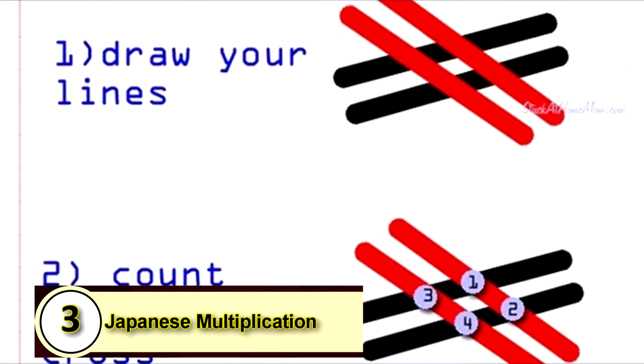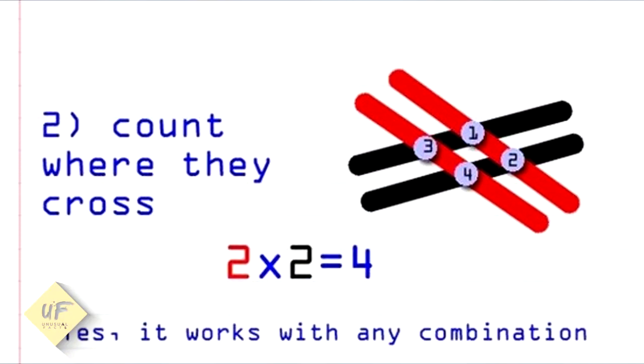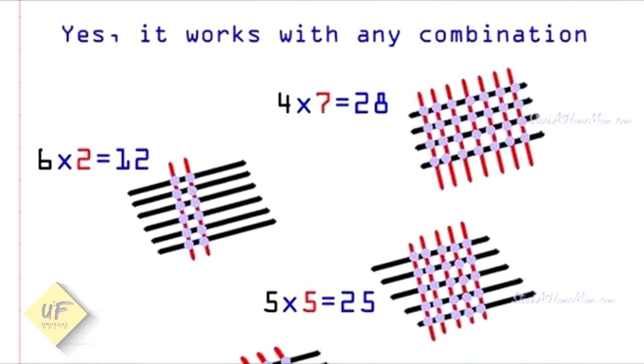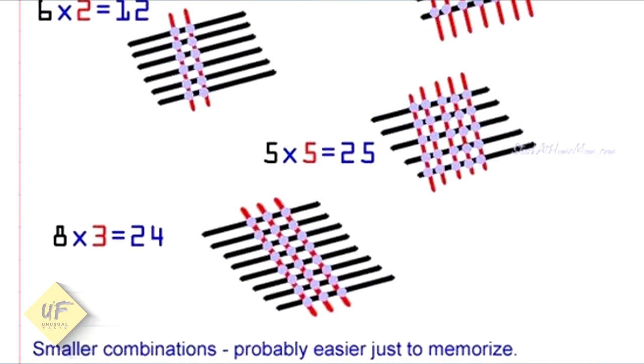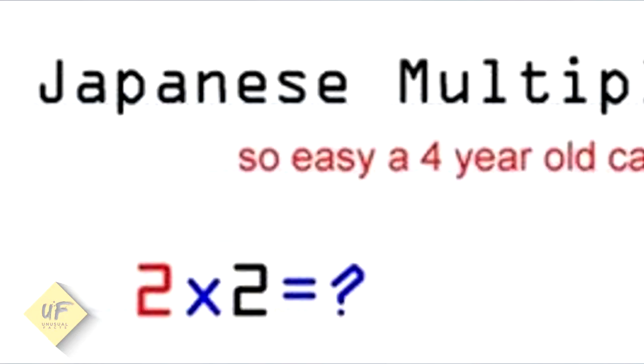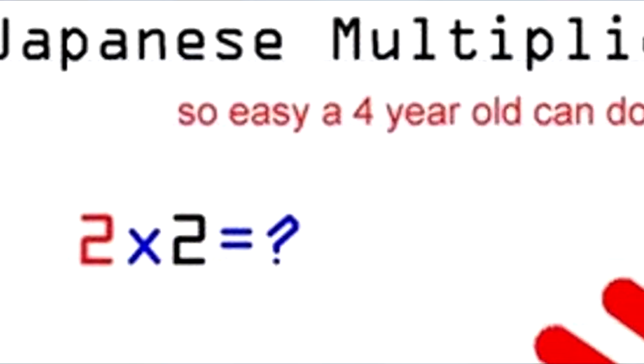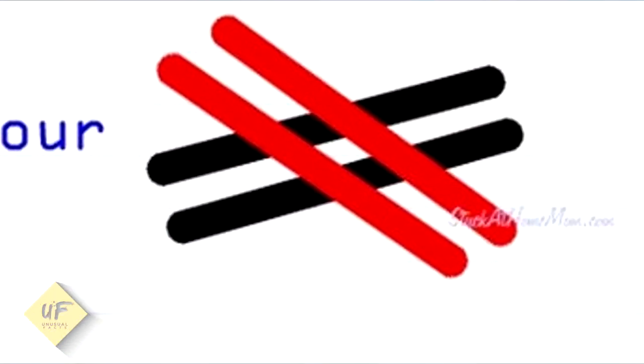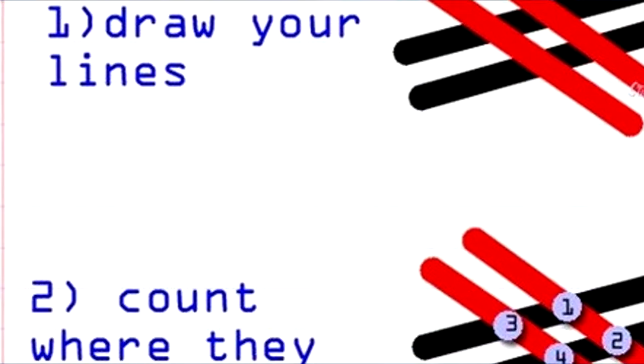Number 3: Japanese Multiplication. Here's an easy way to do Japanese Multiplication. It's so easy that a 4-year-old could do it. 2 times 2 equals what? Step 1 is to draw some lines: 2 going one way, 2 going the other.